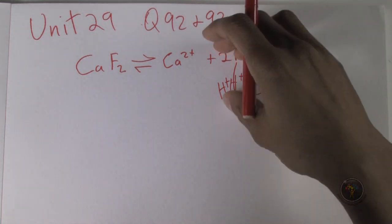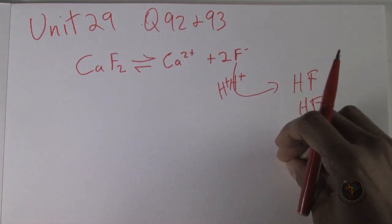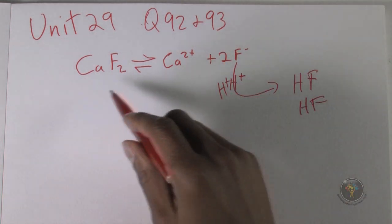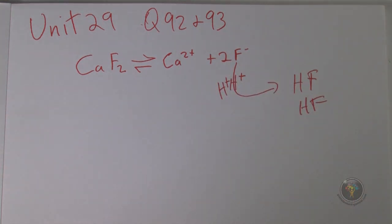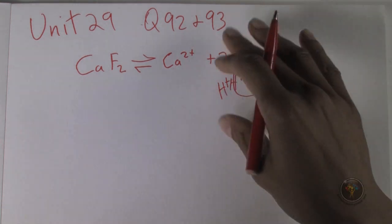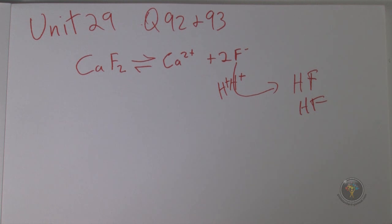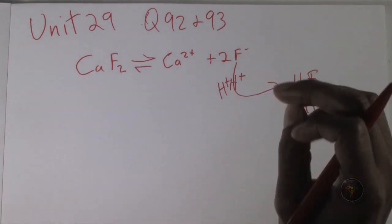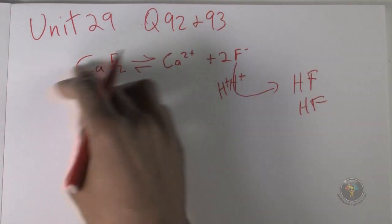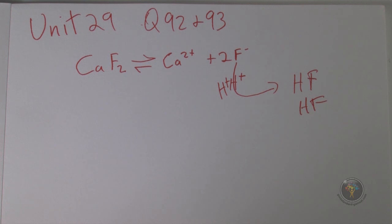If the stress is removing fluoride ions, the reaction will shift right and you will have more dissolving calcium and fluoride ions. The opposite occurs if you add fluoride—that's the common ion effect, shifting left. As a result, CaF2 is more soluble in acidic solution because it removes the fluoride ions.